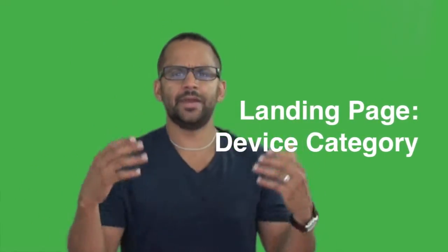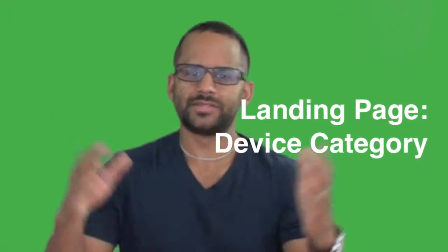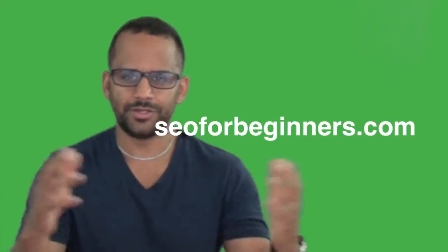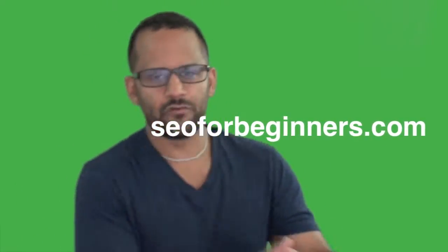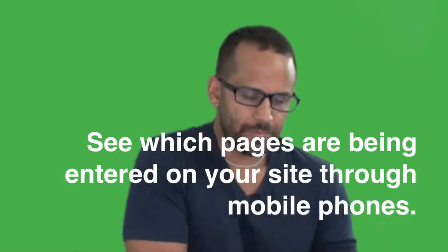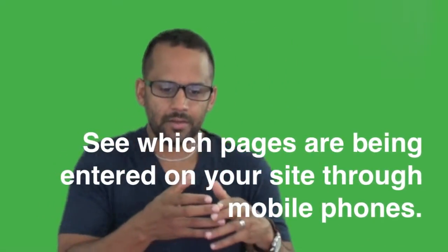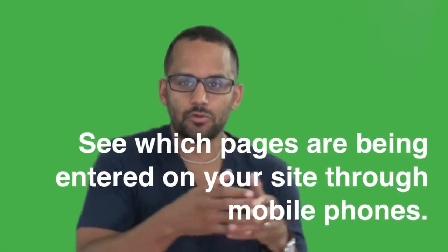The next one is landing page device category. Wow, that's a mouthful. I'm showing you all these things on SEOforbeginners.com, so don't get too worried if you're just watching this video on YouTube. Go to SEOforbeginners.com and you can see all these things. Looking at the device category under landing pages allows you to see which pages are being entered on your site through mobile phones.